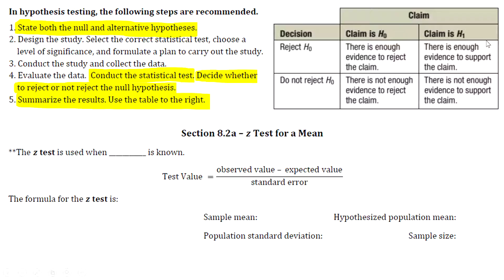How about if your claim is in the alternative? If it's in the alternative and you end up rejecting the null, then that means you're throwing your support to the alternative. You reject the null, therefore you support the alternative.